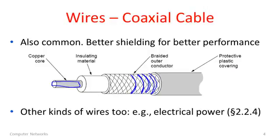There are many other kinds of wire we might use too. One interesting kind is household electrical power lines. These are starting to be used to carry information around your home, just by reusing the existing infrastructure. You can read a little bit about it in the text if you'd like.